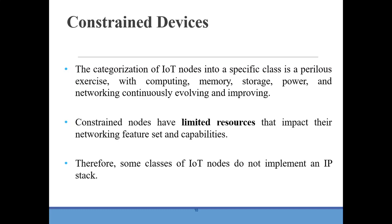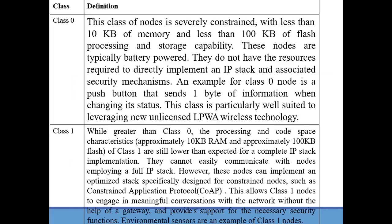According to RFC 7228, constrained nodes can be broken down into three classes: Class 0, Class 1, and Class 2. Class 0 nodes have less than 10 KB of RAM and less than 100 KB of flash storage, and are usually battery-powered. They do not have the resources required to directly implement an IP stack. An example of a Class 0 node is a push button that sends one byte of information when changing its status.